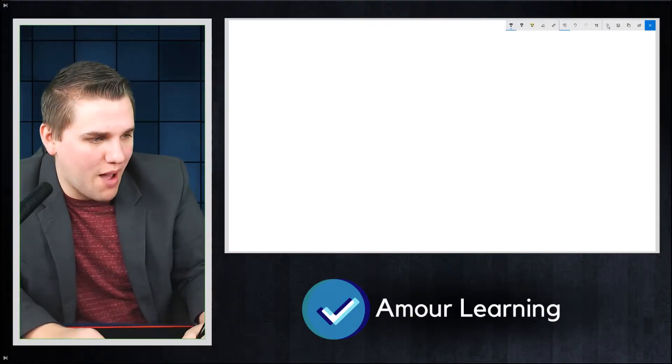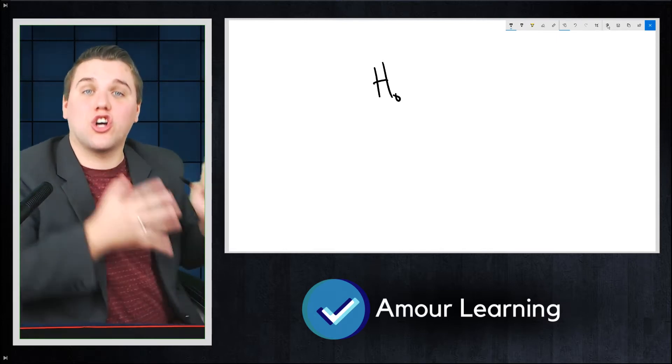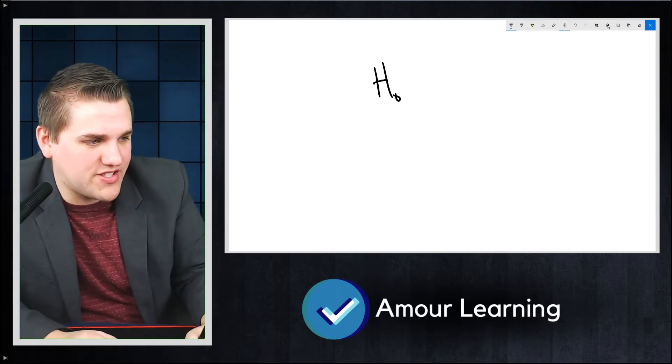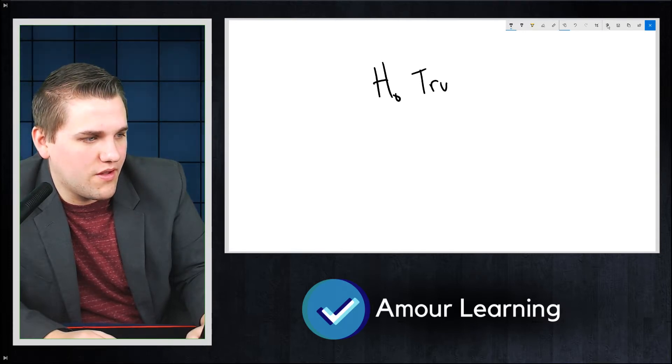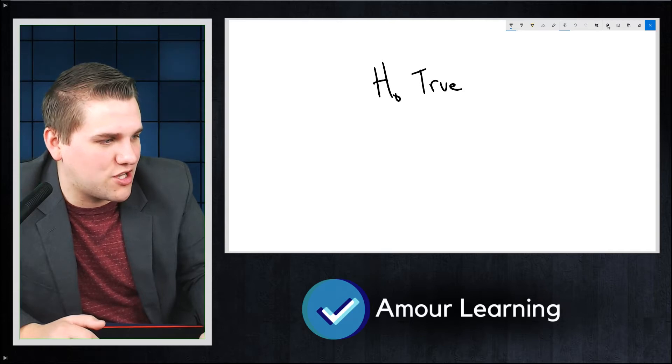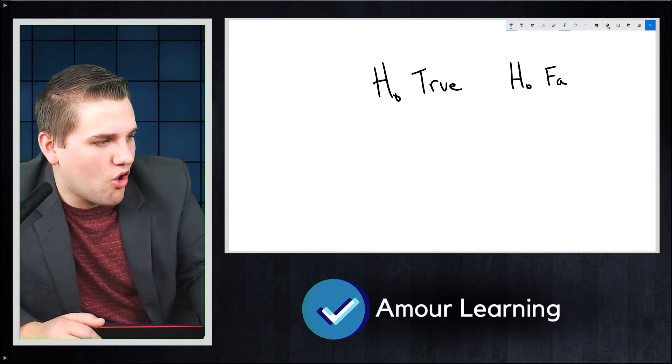Now, with a statistical experiment, you typically have what's called a null hypothesis. And again, this is the thing that the scientific community currently believes in. Typically, the null hypothesis is true and the scientific community got it right. But every once in a while, the scientific community gets it wrong, and you have a false null hypothesis.